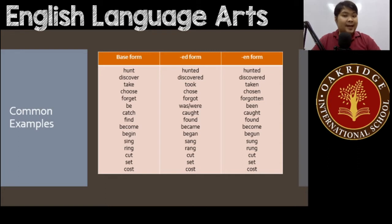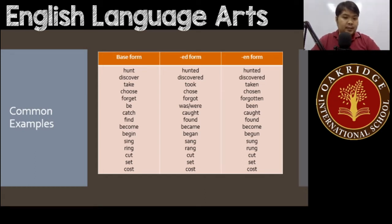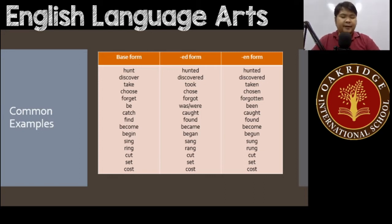For 'take,' it's different: the ed form is 'took,' and the en form is 'taken' — you just add 'en.' Similarly, 'choose' becomes 'chose' in the ed form but 'chosen' in the en form. 'Forget' becomes 'forgot' in the ed form and 'forgotten' in the en form.